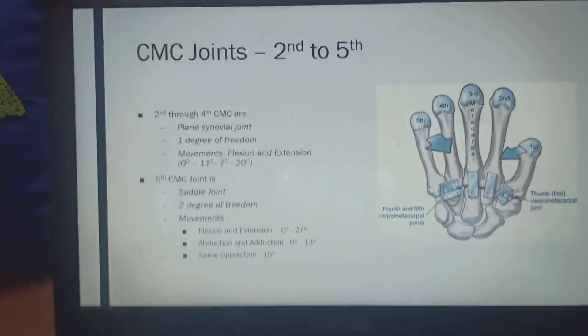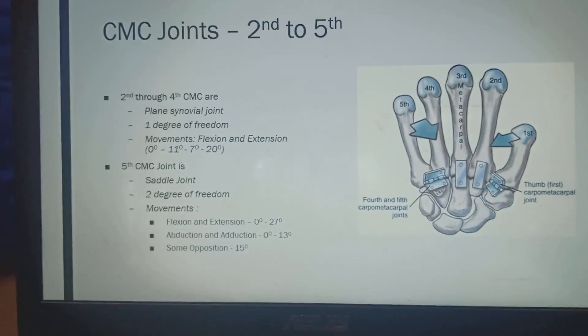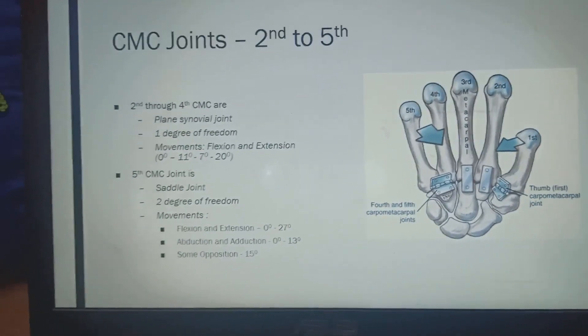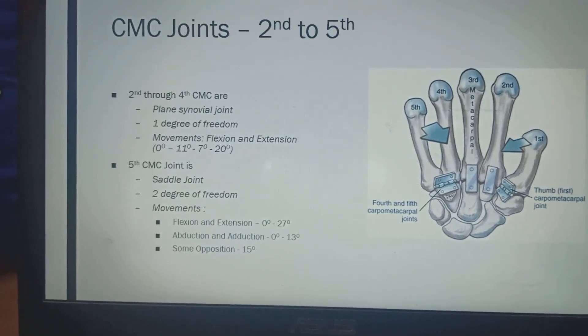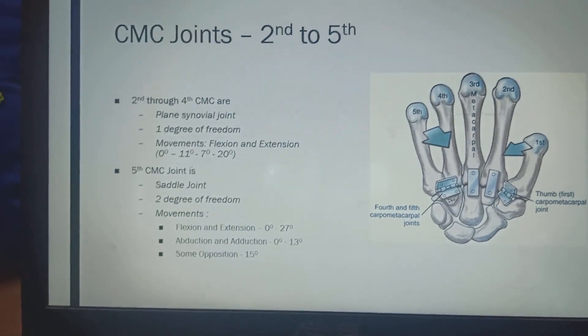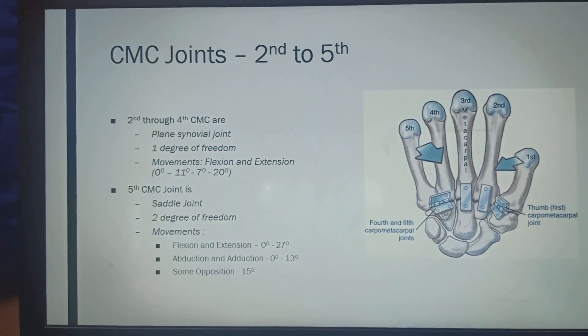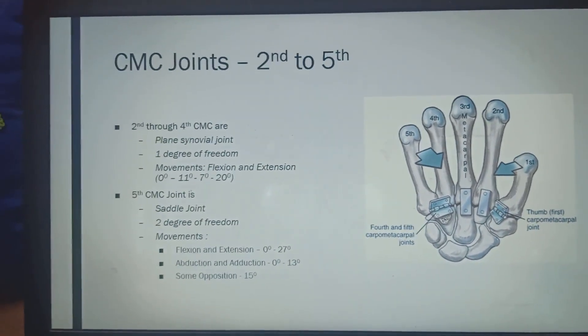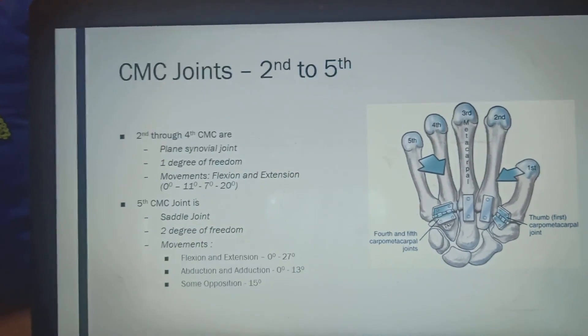I will be also sharing you with all these details with my PPT but before that we will be moving to some of the types of the joints. 1st CMC like 2nd to the 4th CMC joints are the plain synovial joint which has only 1 degree of freedom. That means flexion and extension whereas 5th CMC is saddle